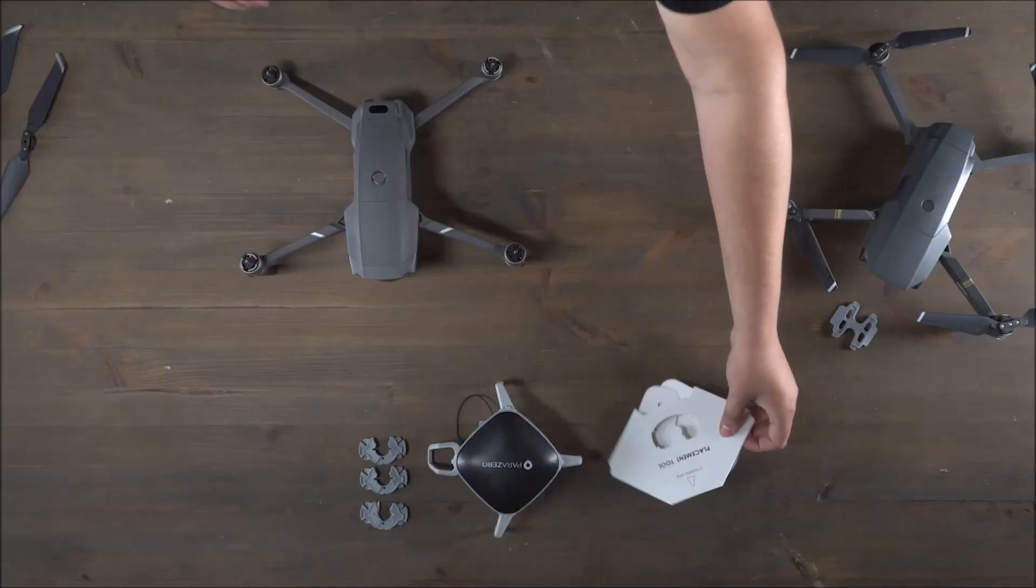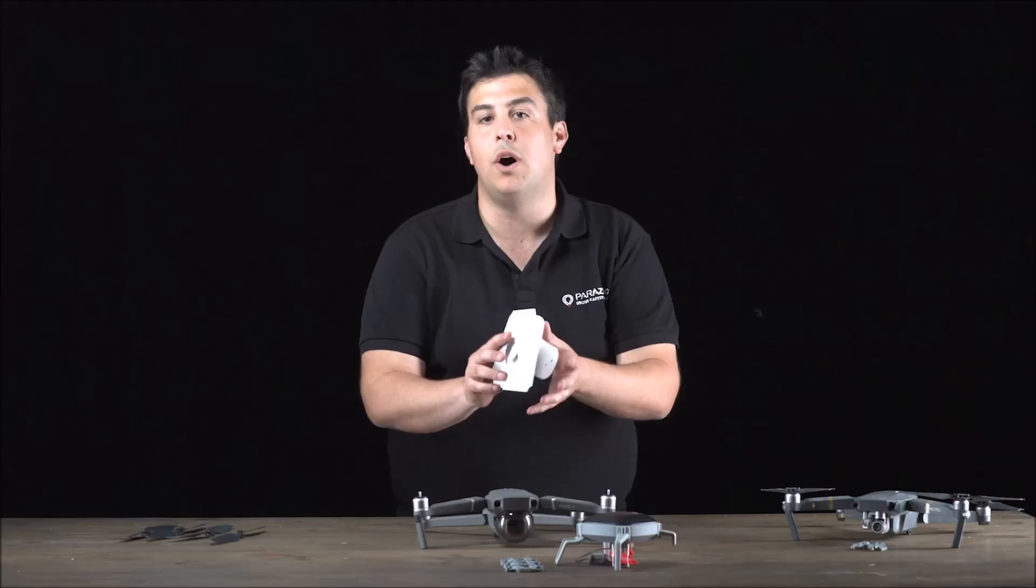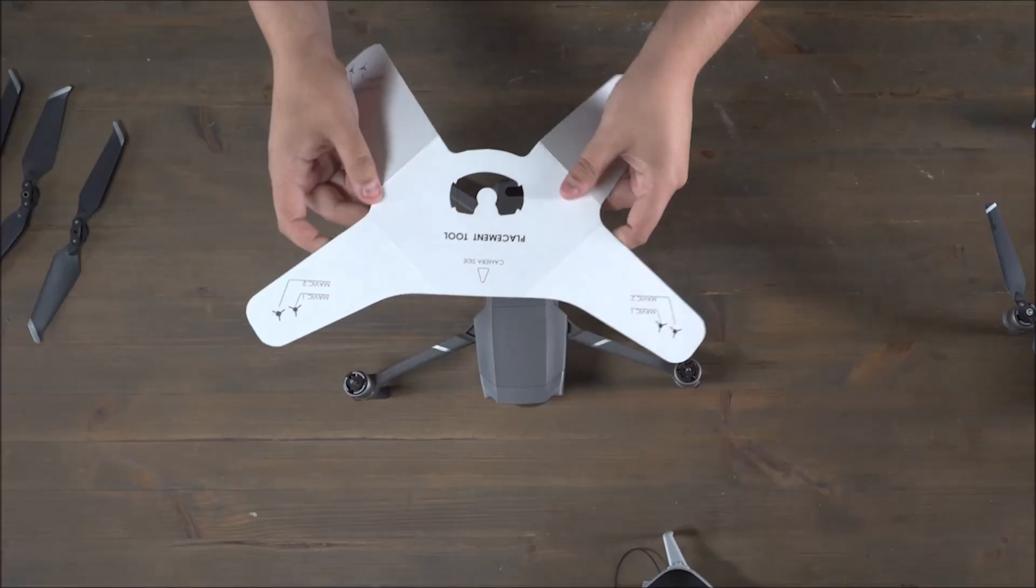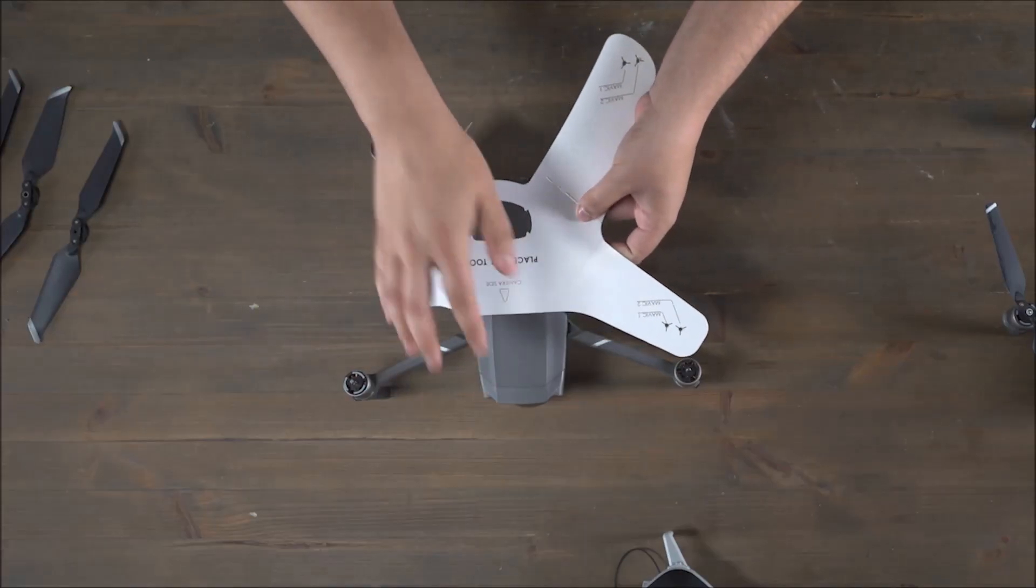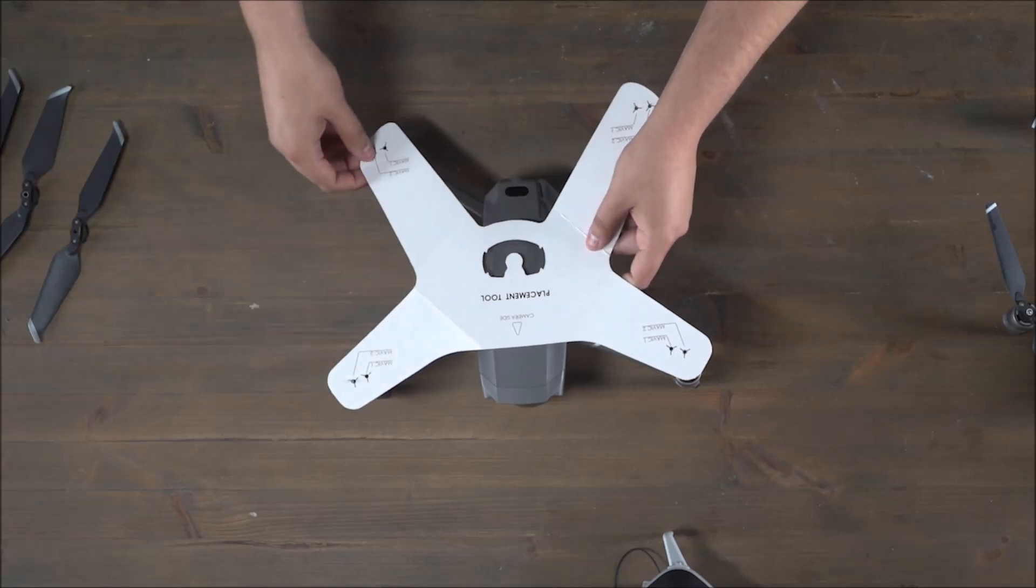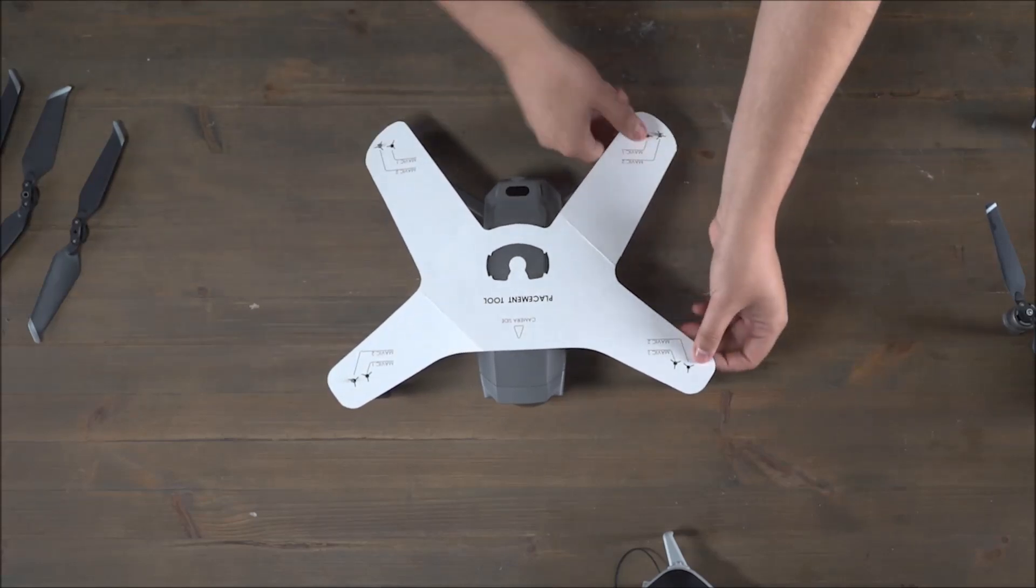Now I'm going to grab the placement tool. There's only one correct way to put the placement tool in the placement stamp, so pay attention. The camera side facing forward towards the camera. You then place each hole in the appropriate part on top of the propeller connector.